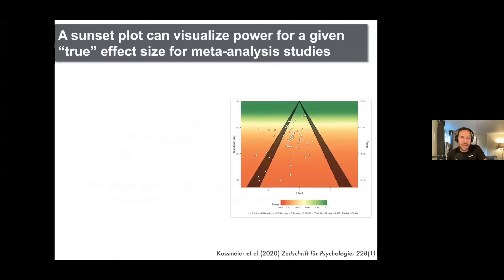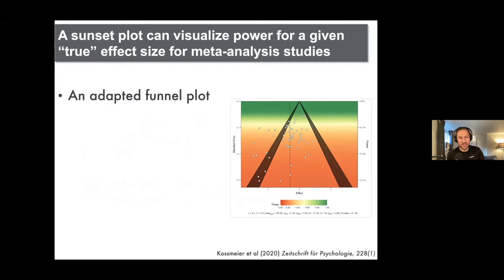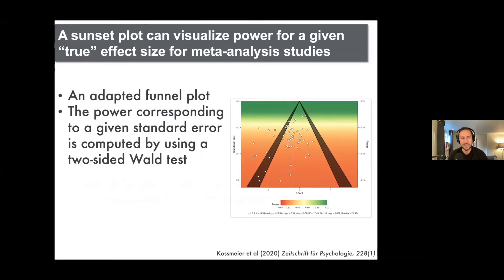I came across this way of visualizing power for meta-analysis studies. Say you run a meta-analysis, and assuming that the summary effect size is the true effect size — we'll come back to that issue — you can calculate and visualize the power for all the studies included using what's called a sunset plot, which is essentially an adapted funnel plot. The sunset plot calculates the power corresponding to a given standard error using a two-sided Wald test.